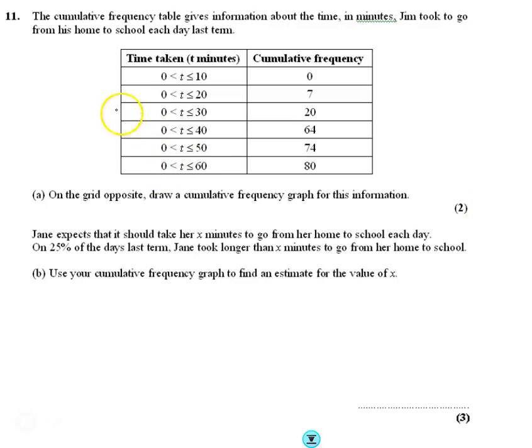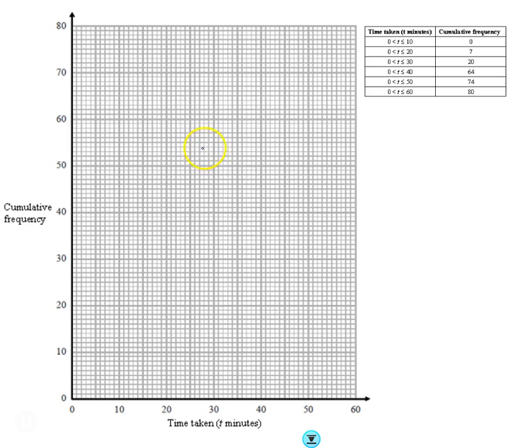Question number 11. This gives us a cumulative frequency table that shows the time in minutes that Jim took to go from his home to school each day. We've got the table, we've already got the cumulative frequency, and we need to plot it on the graph. I've got that graph just on the next page. We need to remember that for cumulative frequency we plot at the top end of the intervals. Here's a little version of the graph, here's our grid.